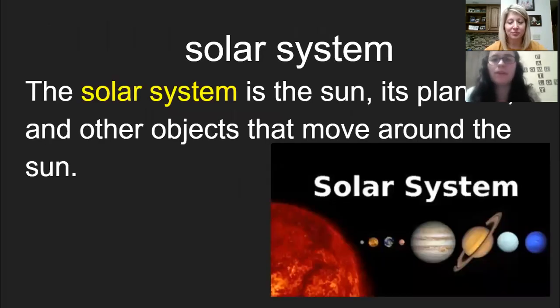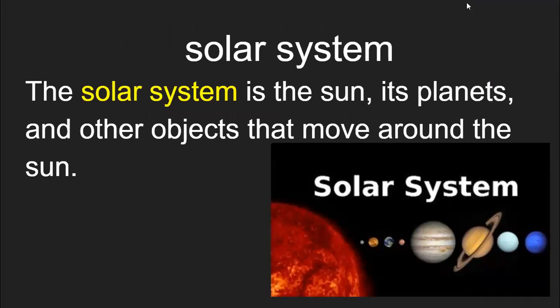The first vocabulary word is solar system. The solar system is the Sun, its planets, and other objects that move around the Sun.